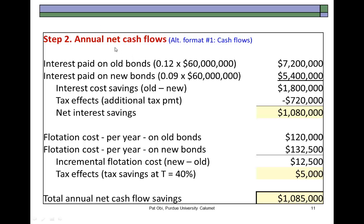Now for the annual net cash flows. The first format identifies two components: interest and flotation cost savings. Interest on the old issue is $7.2 million (12% of $60 million). Interest on the new issue is $5.4 million (9% of $60 million). The net annual savings is $1.8 million, of which $720,000 is the tax payable on those savings. Therefore, net interest savings — total savings minus associated tax — is $1.08 million.